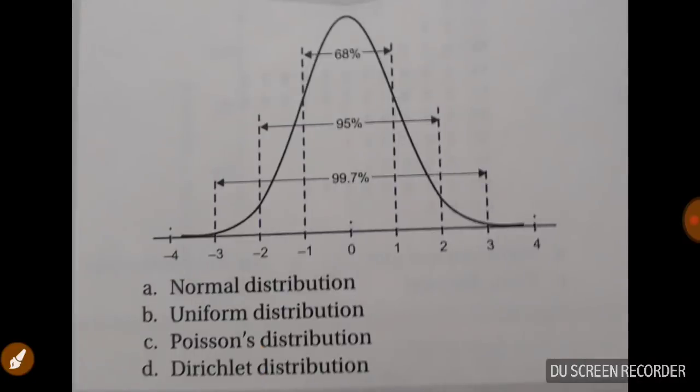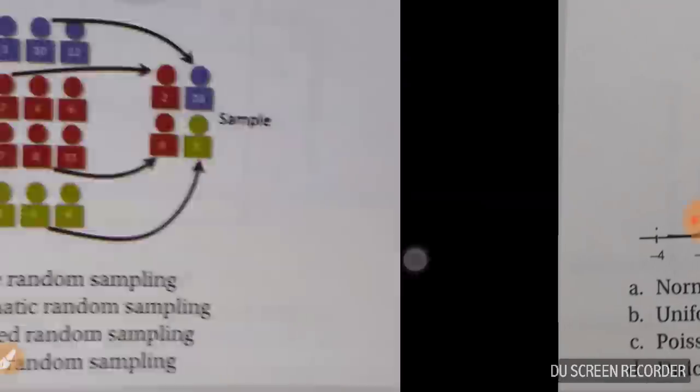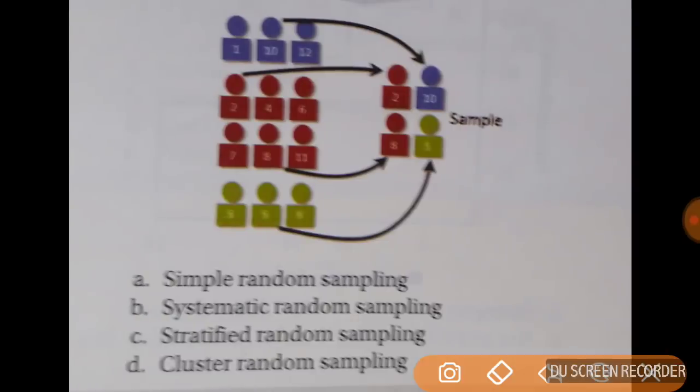Now again this is showing you normal distribution. Now tell me some more questions from sampling. Tell me which type of sampling you are seeing here. If you see here a non-homogeneous population is converted to homogeneous group. How? You see from each strata one, two, three, four. From each strata we are taking some sample.